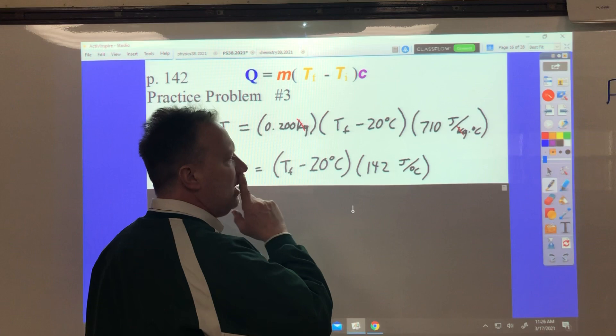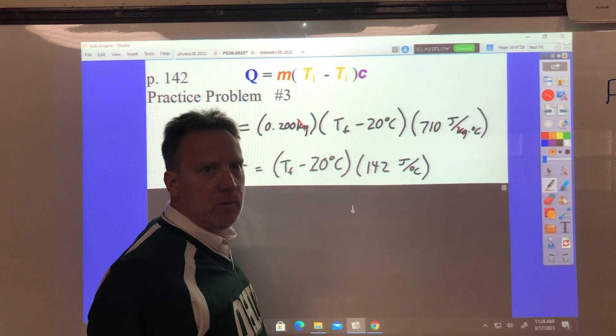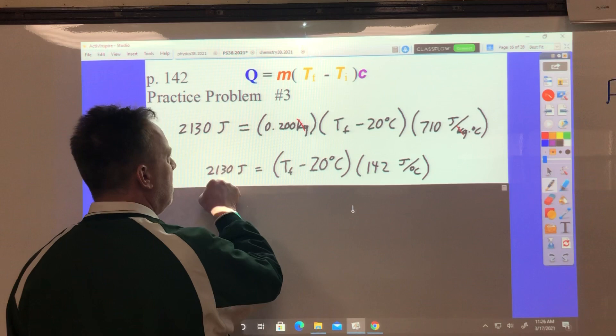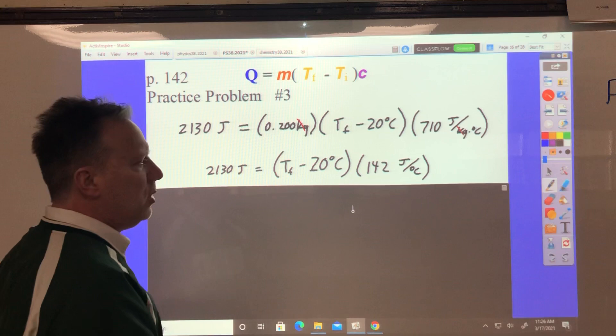Check the number with this on a calculator because when I did this math, I just did the math in my head and did it. So you might want to check to make sure it's right. 0.2 times 710 is 142. This T minus 20 degrees Celsius is still here. 2130 joules is here.